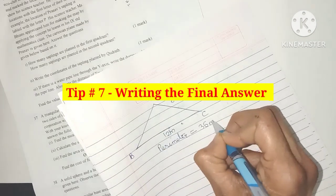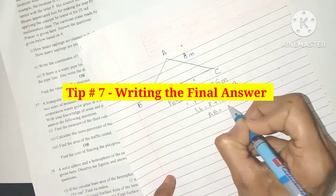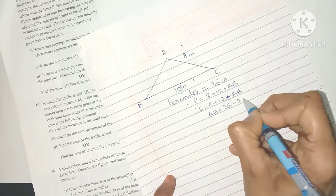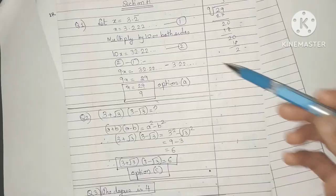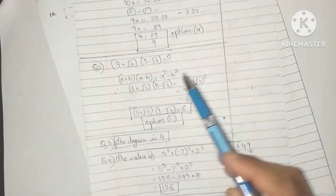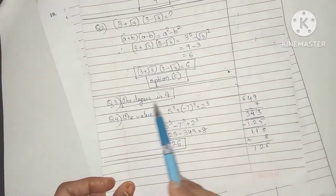The next tip is on writing the final answer. Always enclose the final answer or the proof in a box or underline it very clearly. This way the examiner doesn't have to search for the answer. It can be easily spotted.